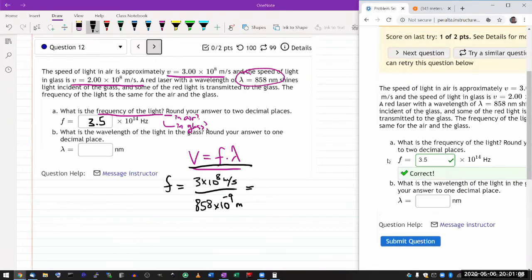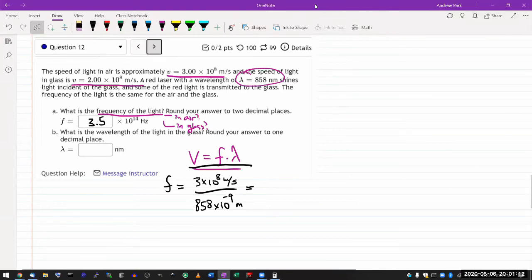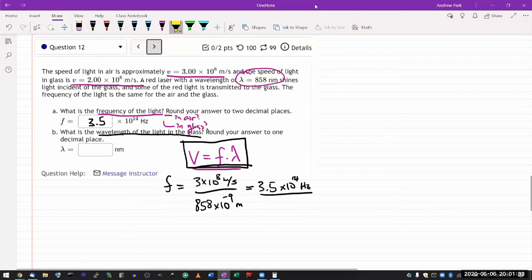Now, this is the additional information you have to bring in to answer part B. So after you got the frequency, for part B, it's asking for wavelength of the light in the glass. And when you have this relationship here, and you are told that the wave speed changes, you have to be able to bring in one additional information. The frequency of light is determined at the source.